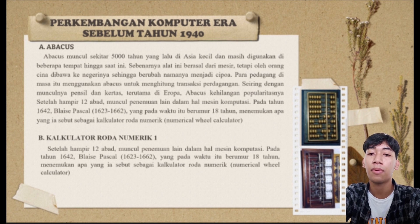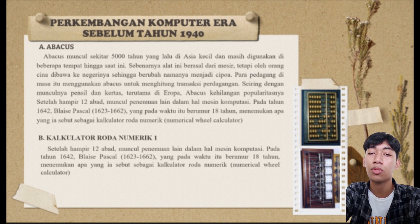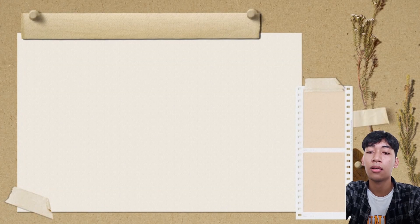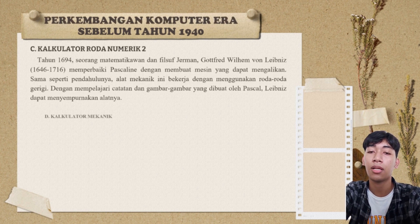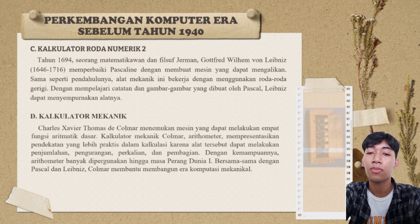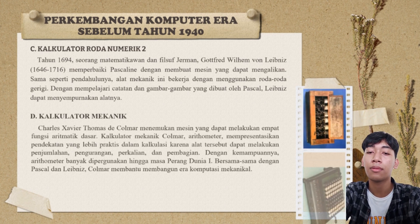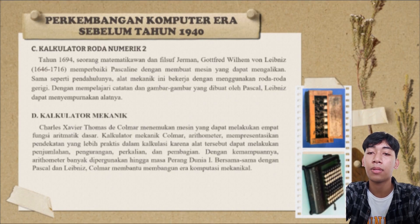Penemuan lain dalam hal mesin komputasi adalah pada tahun 1642. Penemunya adalah Blaise Pascal, 1623 sampai dengan 1662, yang pada waktu itu berumur 18 tahun, menemukan apa yang ia sebut sebagai kalkulator, kemudian disebut kalkulator numerik. Alat mekanik ini bekerja dengan menggunakan roda gerigi.